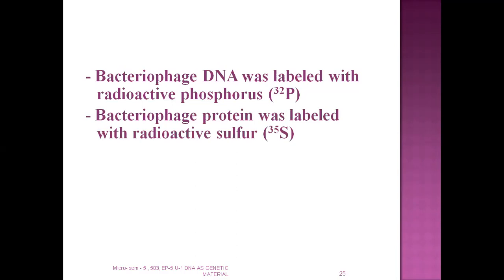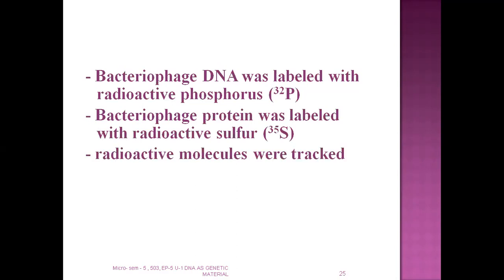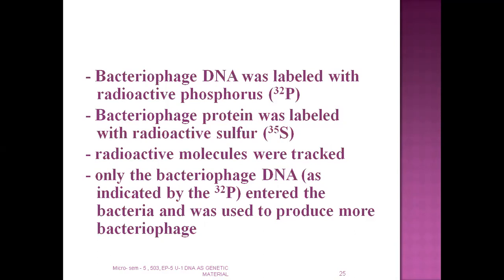They labeled the phage with radioactive phosphorus-32 and radioactive sulfur-35. Protein does not contain phosphorus — it contains sulfur — but DNA contains phosphorus. So if phosphorus is detected, that means DNA is present; if sulfur is detected, then it is protein. The phages were grown with radioactively labeled sulfur and labeled phosphorus respectively, then allowed to infect bacteria. After infection, the mixture was blended to separate phage coats from bacteria, followed by centrifugation. Sulfur was found in the supernatant and phosphorus in the bacterial pellet. The bacteria that were replicating contained phosphorus, not sulfur.